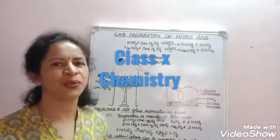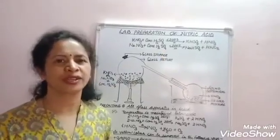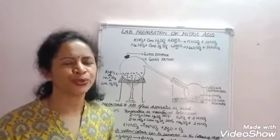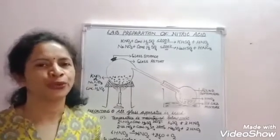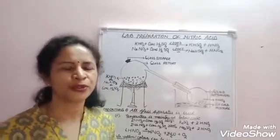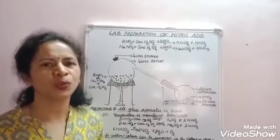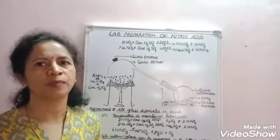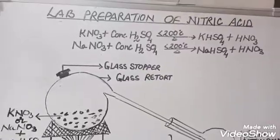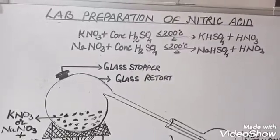Nitric acid is a very important industrial chemical. It is used for the manufacture of fertilizers, perfumes, dyes, explosives, and many other important compounds. For laboratory preparation of nitric acid,